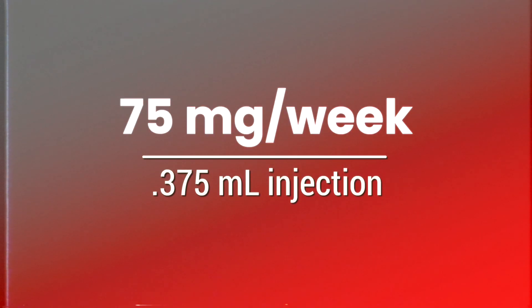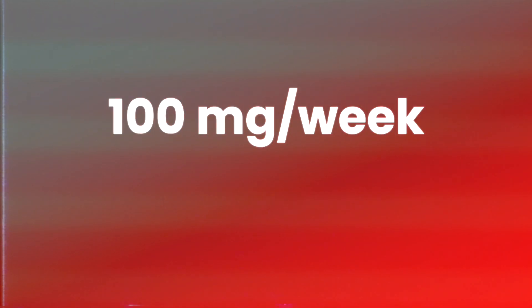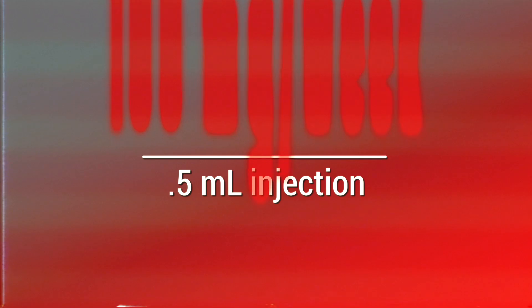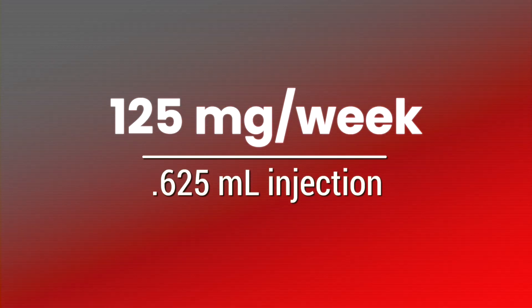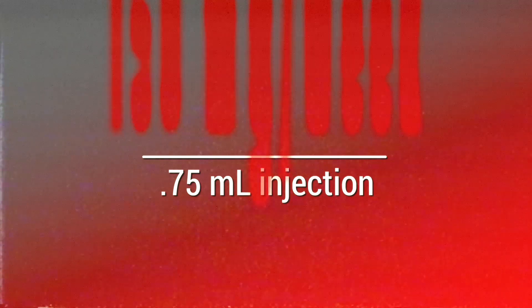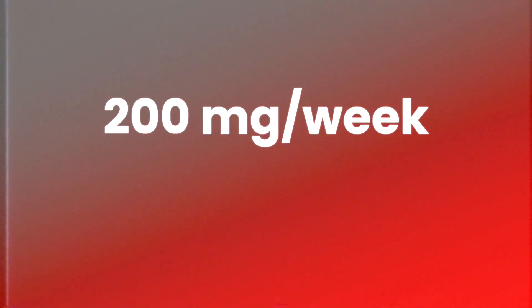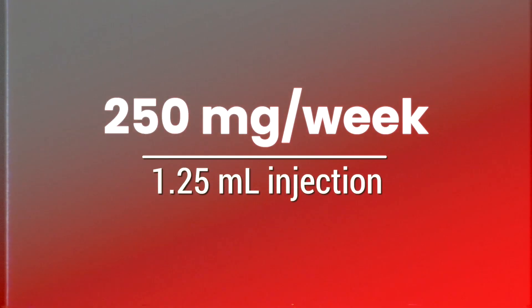75 milligrams per week equals 0.375 mL. Injecting 100 milligrams each week is the same as 0.5 mL, while 125 milligrams is the equivalent of 0.625 mL. If your prescription calls for 150 milligrams each week, that means you're drawing 0.75 mL to inject. 200 milligrams means an even 1 mL draw each week, while 250 milligrams is a 1.25 mL injection.